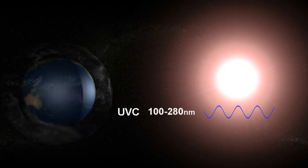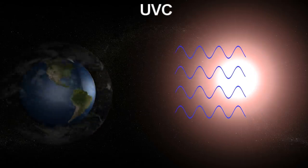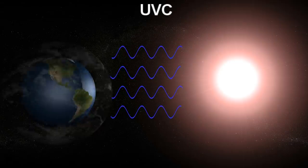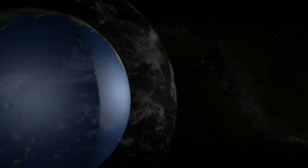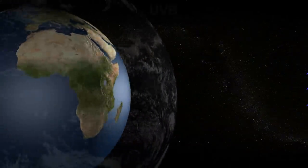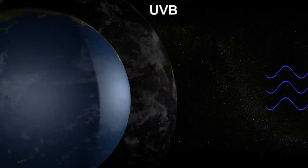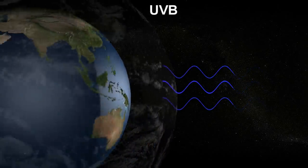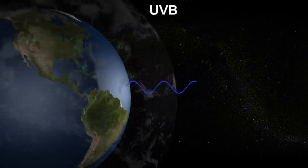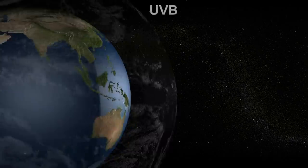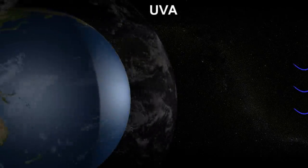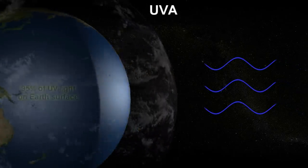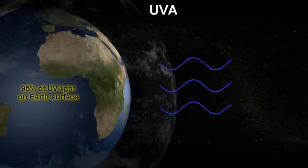The short wavelength, high-energy UVC frequencies are completely absorbed by the ozone layer and atmosphere and thus do not reach the Earth or our skin surface. The medium wavelength, medium-energy UVB frequencies are mostly blocked by the ozone layer and any cloud cover. The long wavelength, low-energy UVA frequencies are essentially unaffected by the ozone layer and thus make up 95% of the UV light that reaches the Earth's surface.